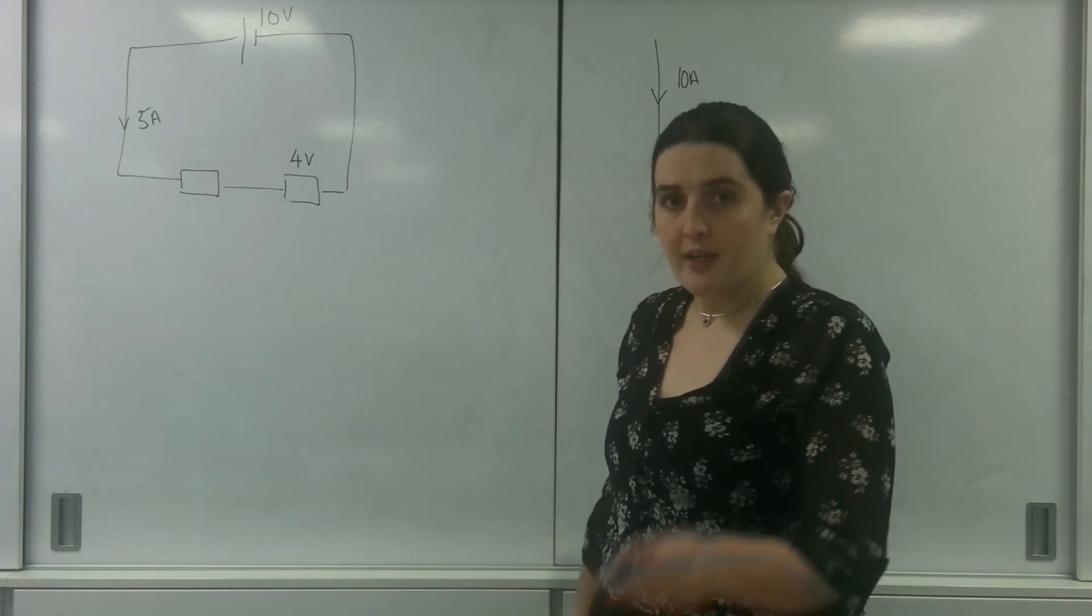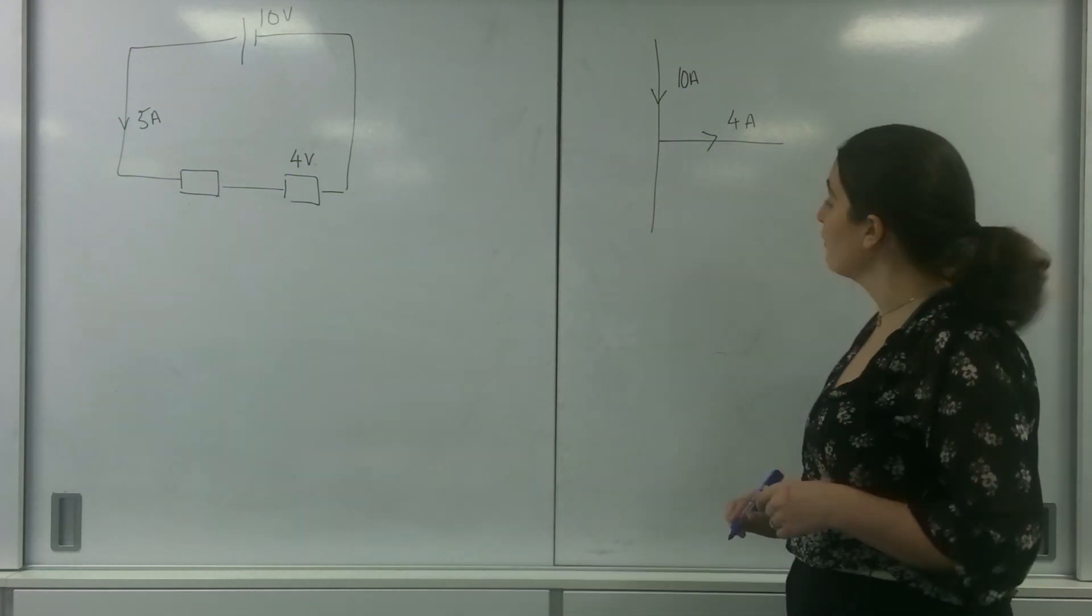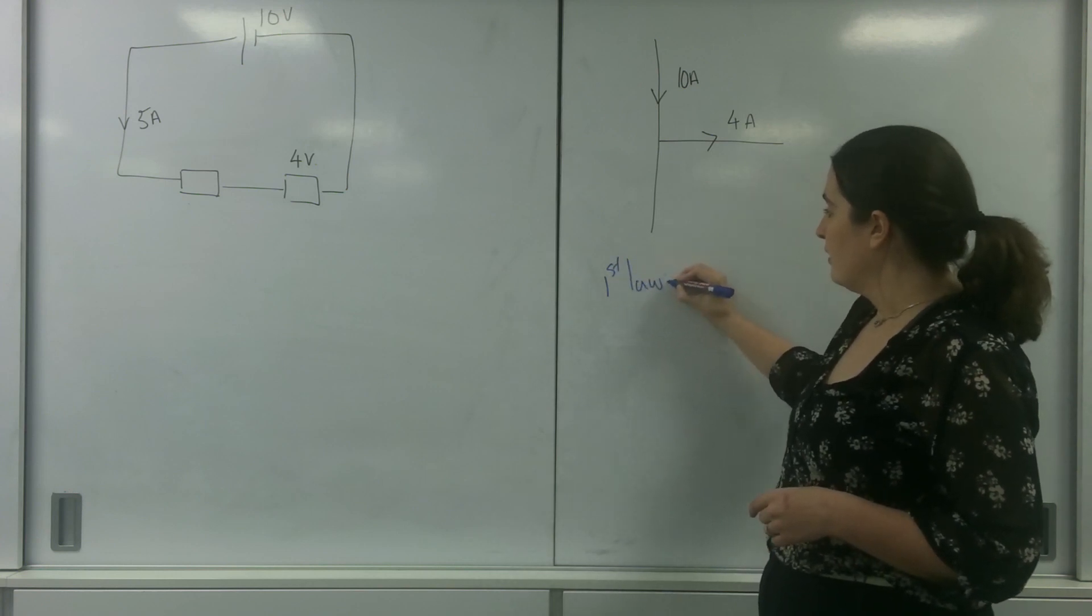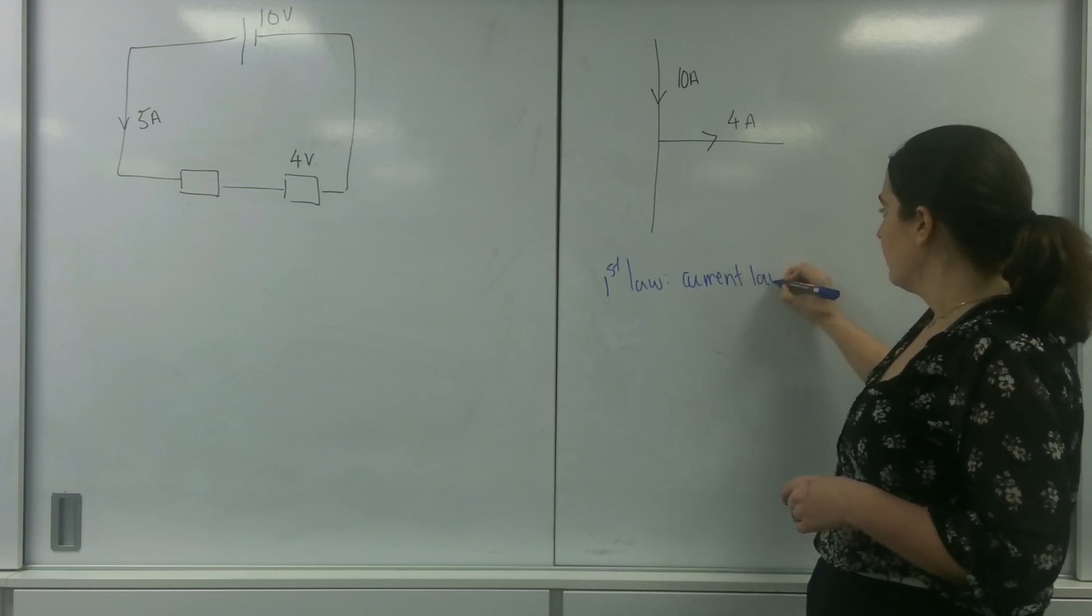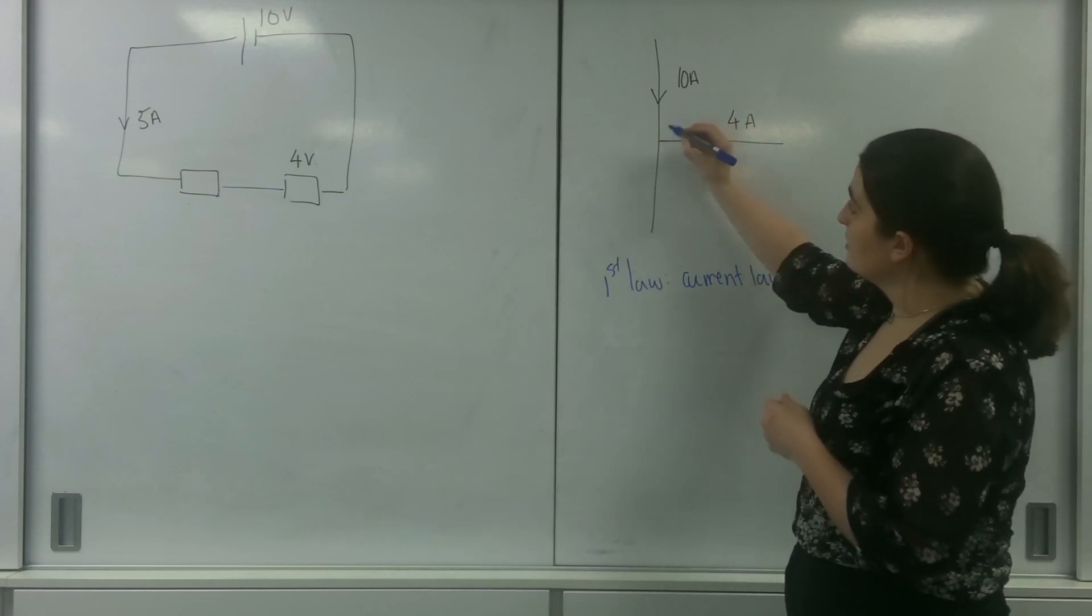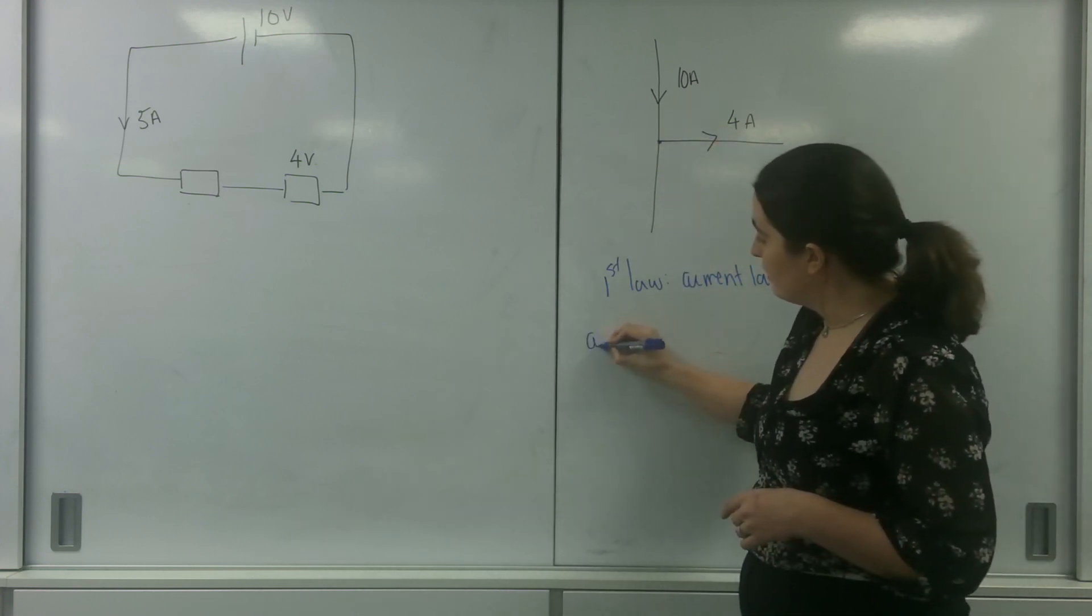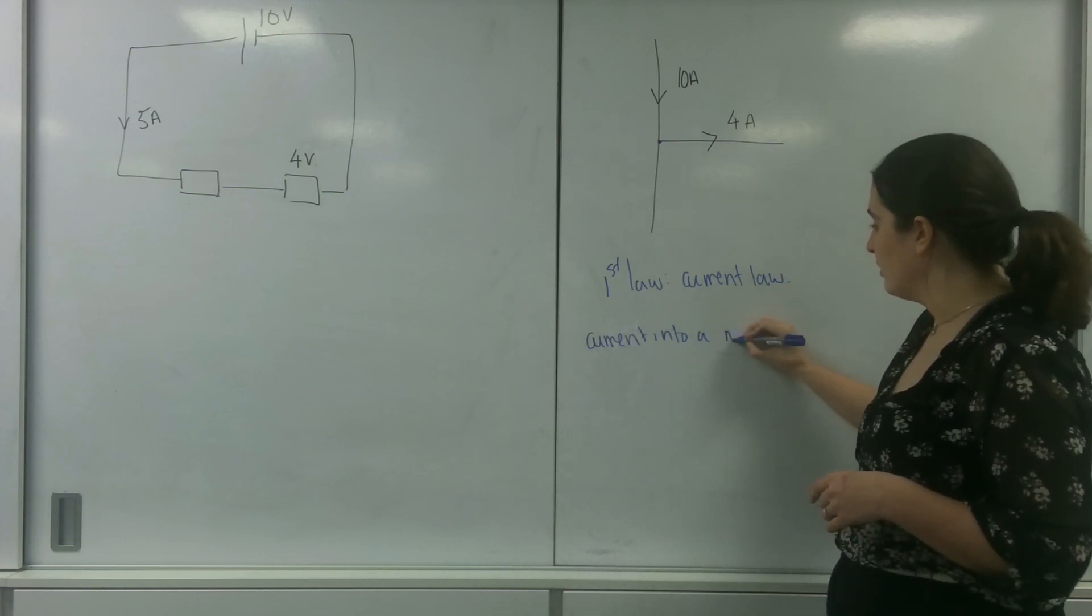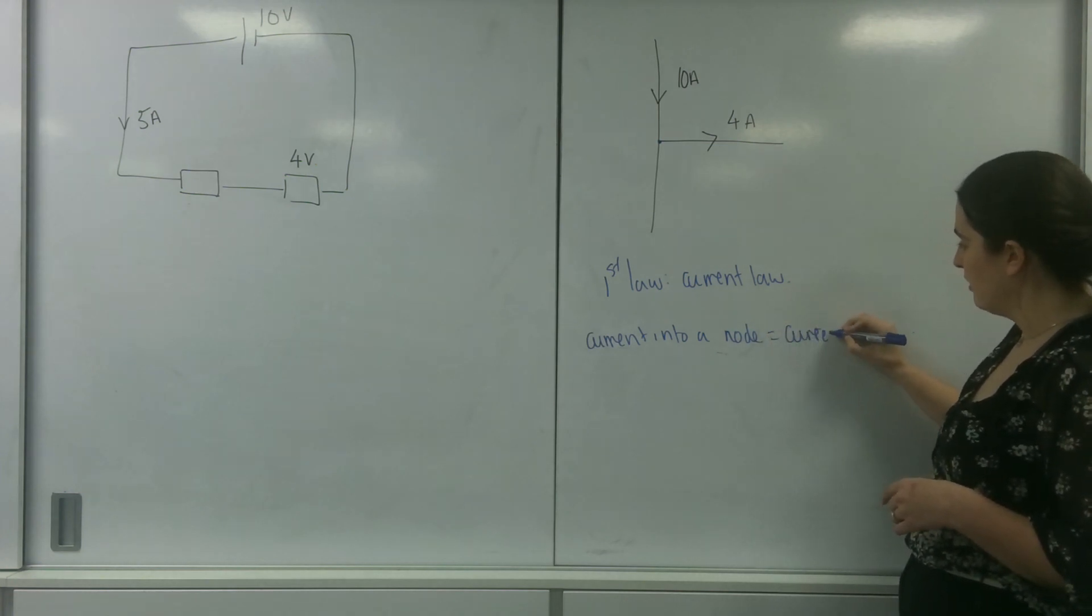Now, Kirchhoff had two laws. The first one here, this is Kirchhoff's current law. So this is the first law, which is the current law. And it says that the current going into a point equals the current going out of a point. So the current into a node equals the current leaving.